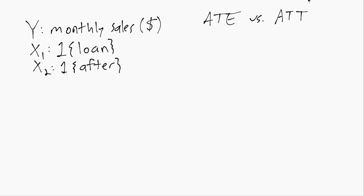And the treatment we're interested in is whether they get a loan. So X1 is the dummy variable for is this one of the businesses that did sometime in our sample period get a loan or not.